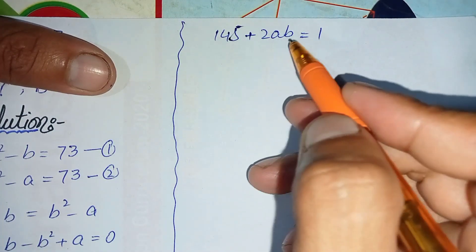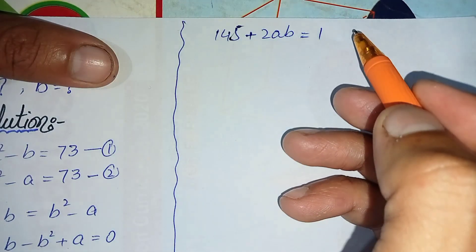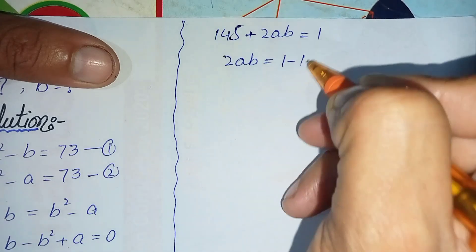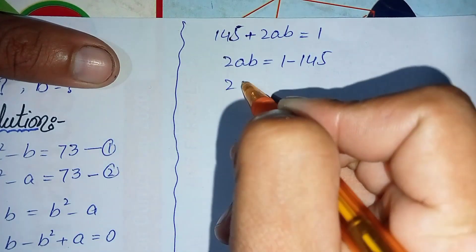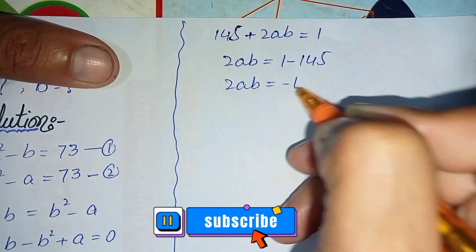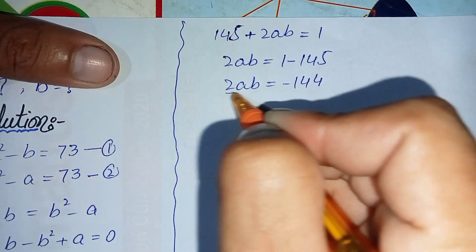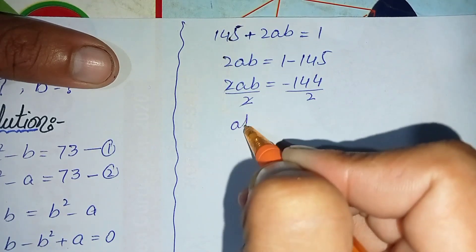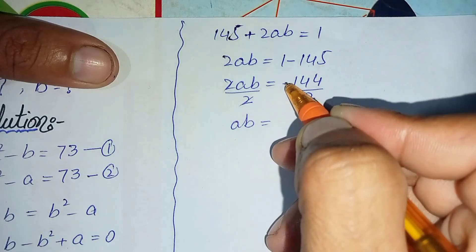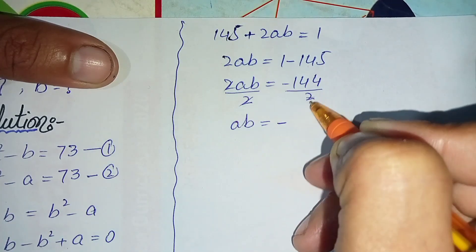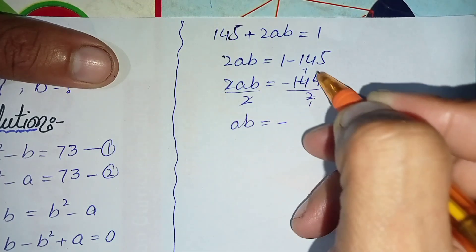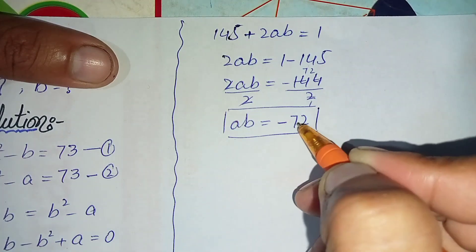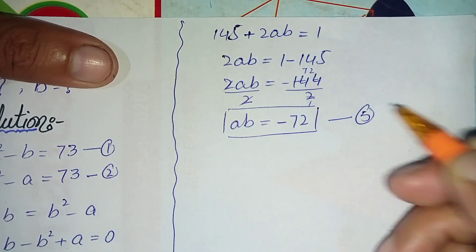Shifting 145 to the right-hand side gives 2ab equals 1 minus 145, which is minus 144. Dividing both sides by 2, the value of ab is minus 72. We call this equation number five.